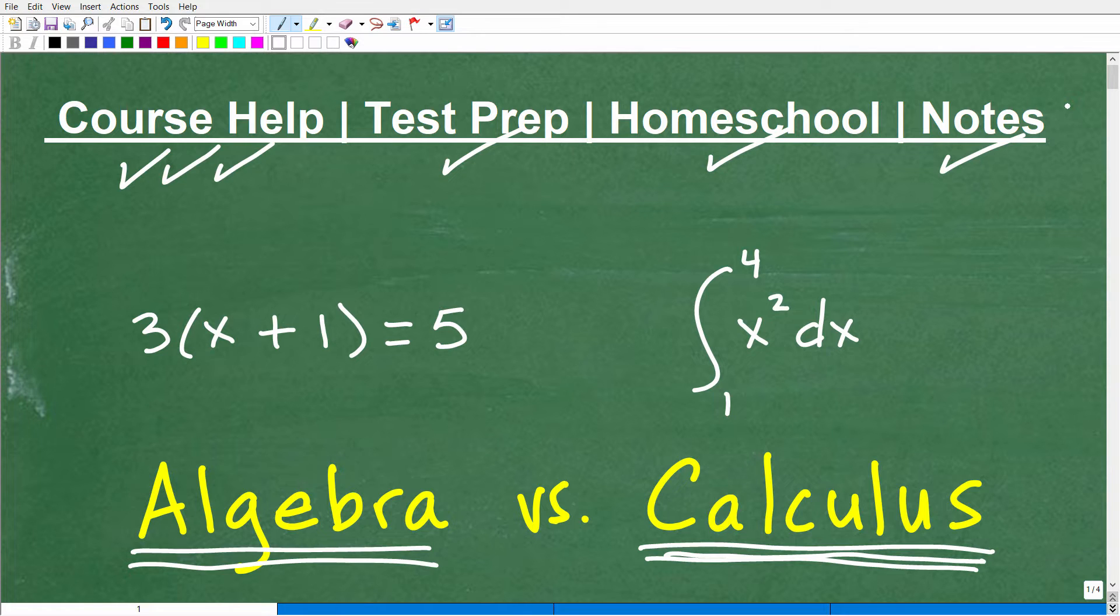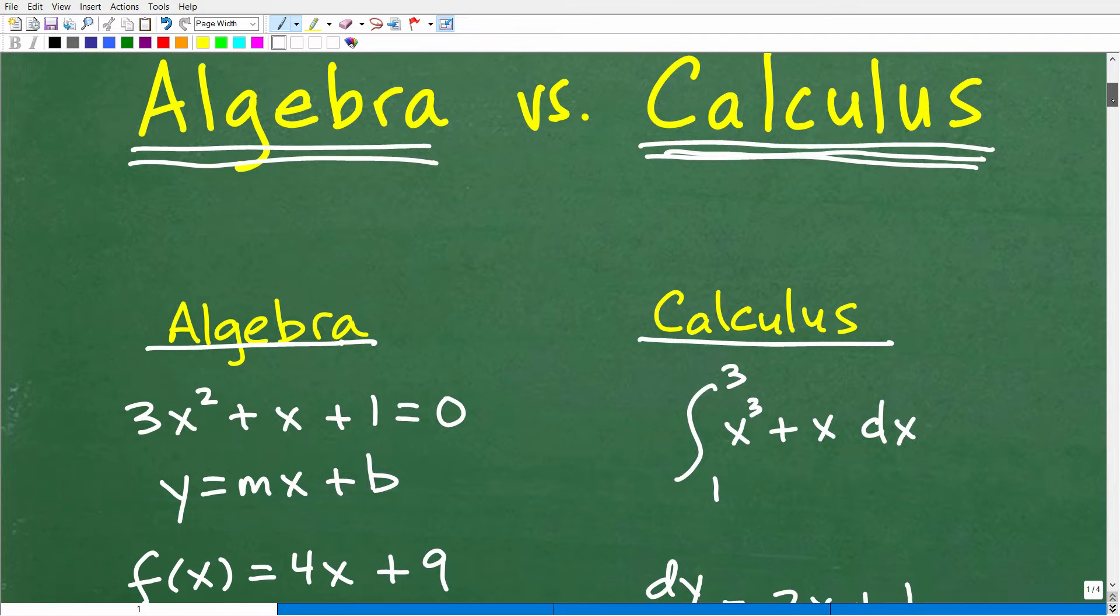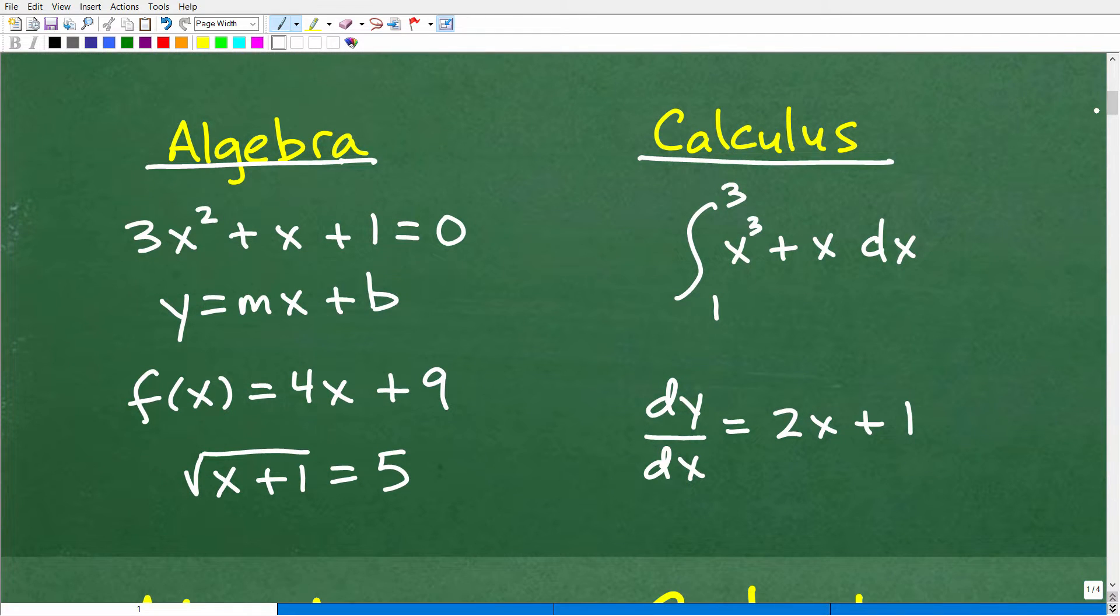Okay, so algebra versus calculus. This is what a typical algebra problem may look like. And this is kind of a typical calculus problem. You can see the notation, especially with calculus, gets very abstract. For that reason, I think a lot of algebra students look at this and they're intimidated by it. You don't have to be intimidated by notation. Believe me when I tell you, if you want to take calculus, you can. Even if you're not doing well in algebra, you can definitely get to a level to be successful in calculus. But of course, it takes hard work and great instruction.